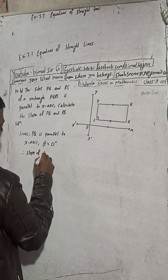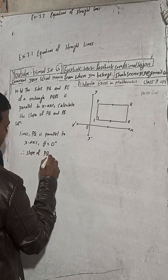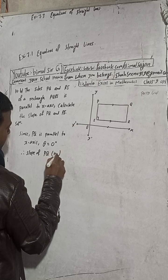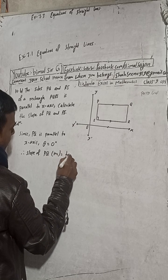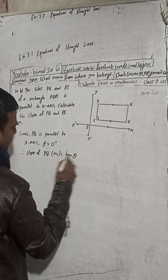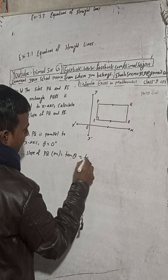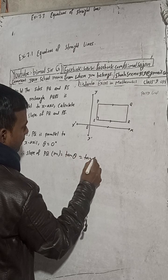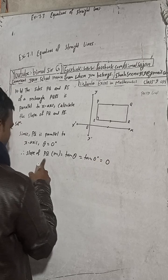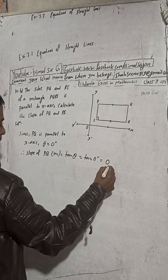Therefore slope of PQ, that is M is equal to tan theta. That means tan zero degree is equal to zero. So slope of PQ is equal to zero.